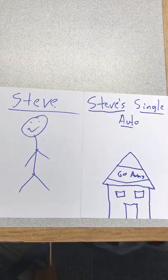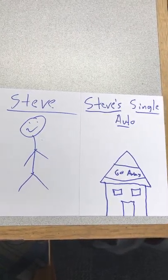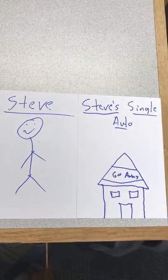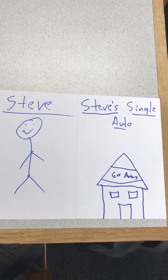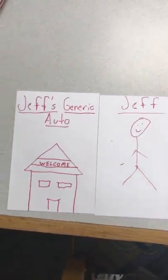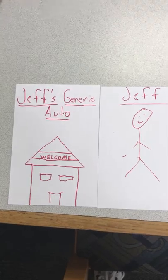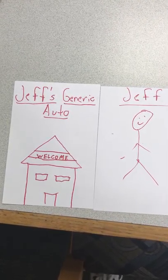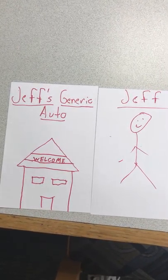Because of this model, Steve only sells four-door sedans and doesn't offer any other options for customers. Jeff owns the used car dealership across the street that offers a variety of options for customers, ranging from small two-door cars to large SUVs and trucks.